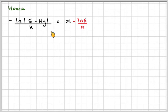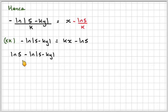If we want to get rid of this in the denominator, if we multiply the whole thing through by k, we're going to get minus ln of 5 minus ky equals kx minus ln of 5.